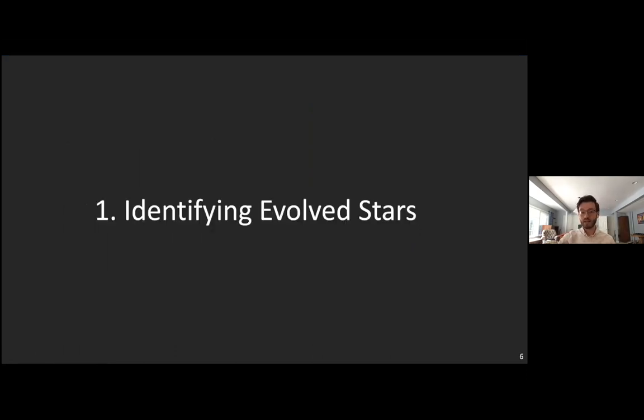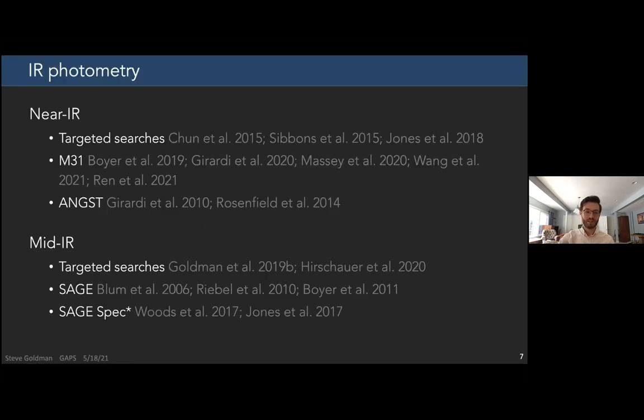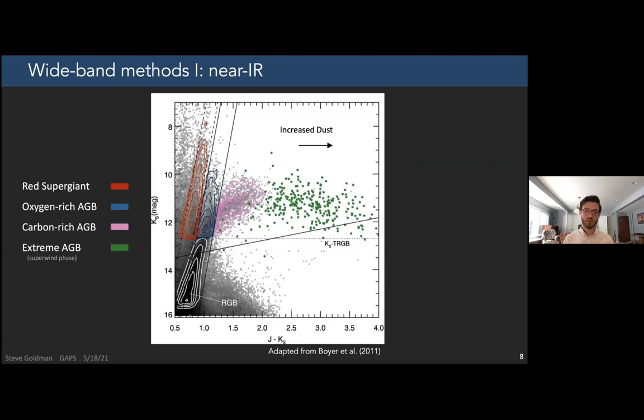Now identifying evolved stars. How do we do it? This might be a review for some of us. Here's some recent studies of groups that have been trying to identify evolved stars using infrared photometry. A typical method is using the J minus K color. This is using the near infrared colors to probe these important molecular features. These groups tend to fall in these colored regions that I'm showing here on this color magnitude diagram or CMD. I'm also showing the extreme or X AGB stars.